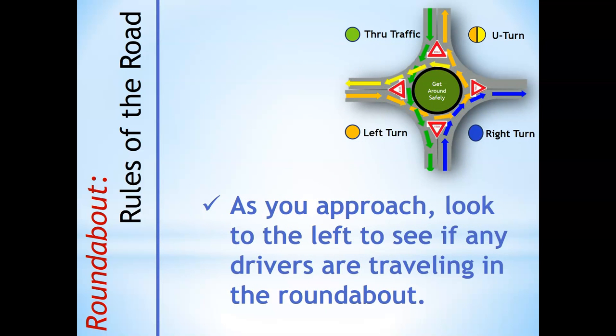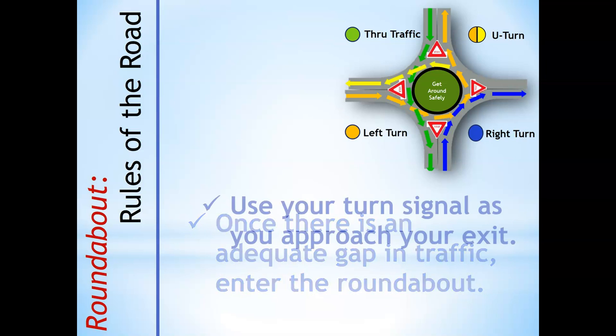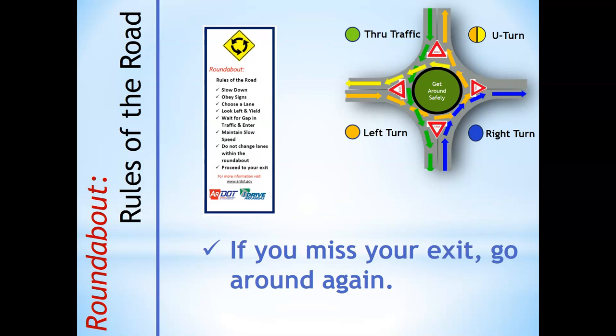To recap: as you approach the roundabout, look to the left to see if any drivers are traveling in the roundabout. If so, yield to them. Once there is an adequate gap in traffic, enter the roundabout. Use your turn signal as you approach your exit. If you miss your exit, just go through the roundabout again.